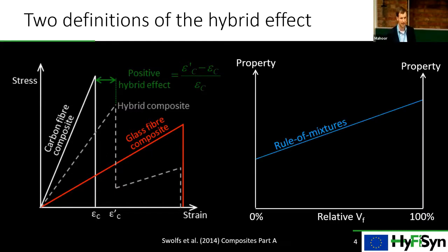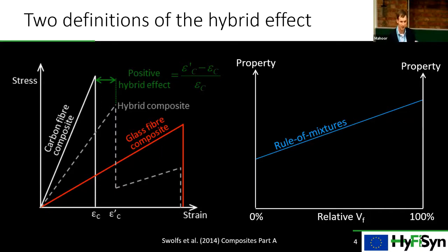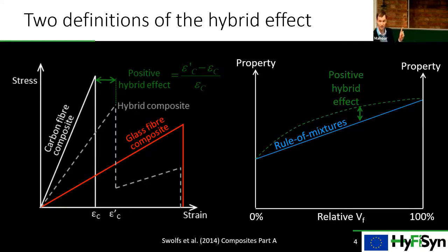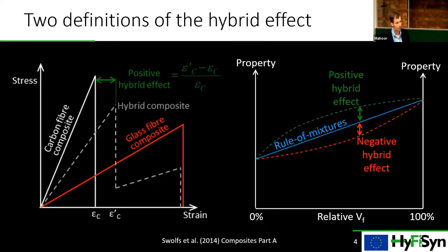The second definition is to simply compare against a rule of mixtures. Your hybrid will be somewhere along that rule of mixtures line. Depending on how smart you are, this rule of mixtures could be complex or very simple — it's somewhat subjective what type to use. If we already account for the hybrid effect in the rule of mixtures, the hybrid effect disappears. Also worth emphasizing: the hybrid effect can be positive, but it can also be negative. For the ultimate failure strain, negative hybrid effects are actually reasonably common.